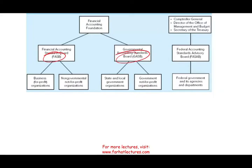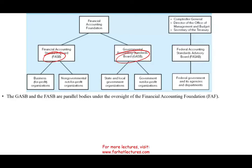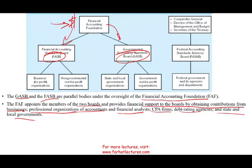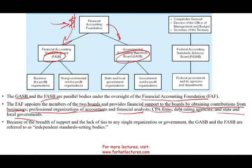Both FASB and GASB are basically brother and sister organizations, and their parent is the Financial Accounting Foundation, or FAF. FASB and GASB are parallel bodies under the oversight of the FAF. FAF appoints the members of the two boards and provides financial support by obtaining contributions from businesses, professional organizations of accountants, financial analysts, CPA firms, debt rating agencies, and state and local governments. That's why they are considered independent standard setting bodies — no single party finances them.